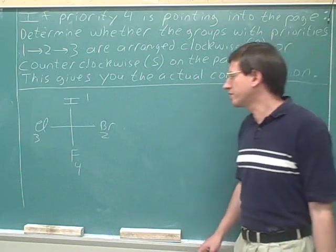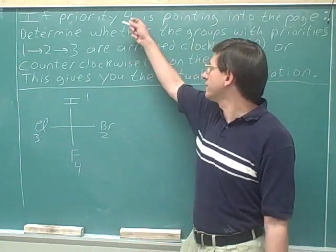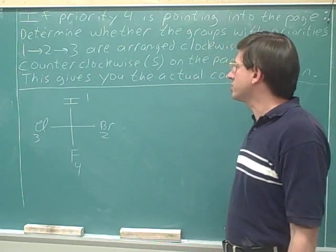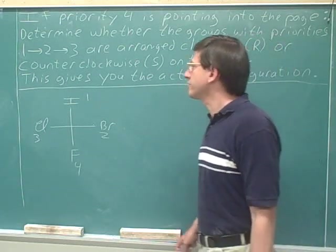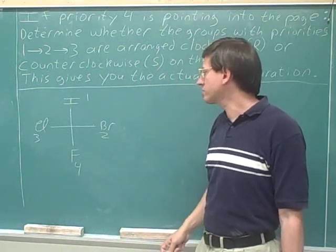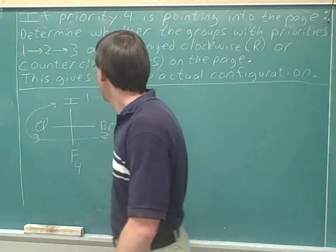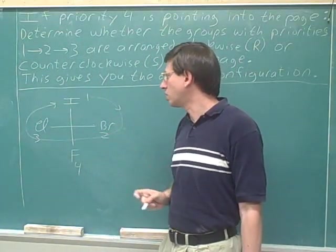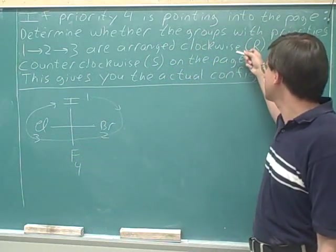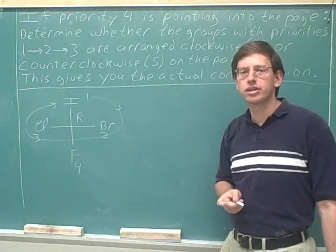Now, where's the number 4 priority? It's on the vertical line. Remember that in a Fisher diagram, the vertical lines are pointing into the page, so the number 4 priority is pointing into the page. So now we should just focus on the 1, 2, and 3 priorities. Imagine moving from 1 to 2 to 3 in a cycle. Going from 1 to 2 to 3, the arrows form a clockwise circle. Clockwise is symbolized by R, so this stereocenter has an R configuration.